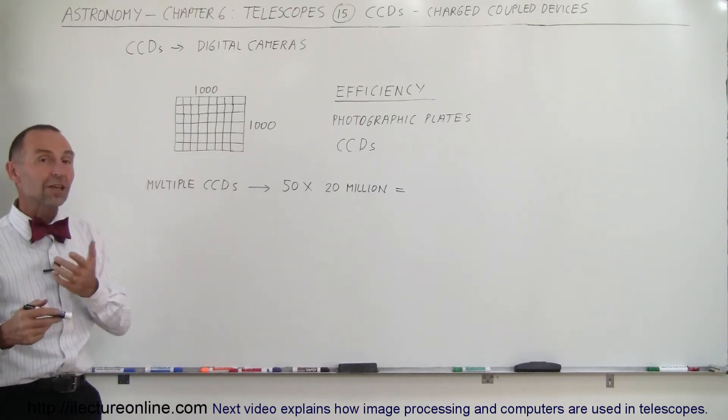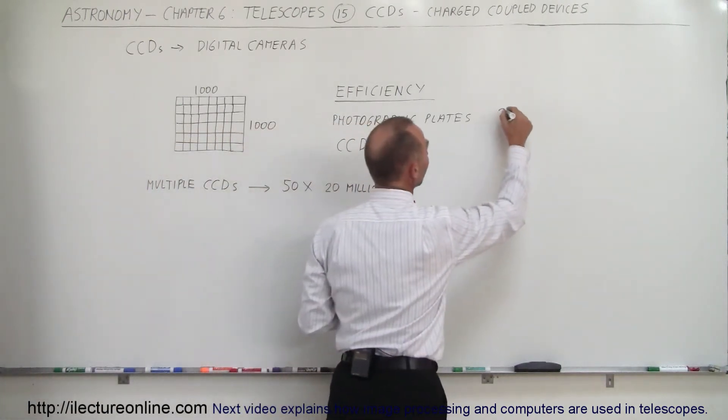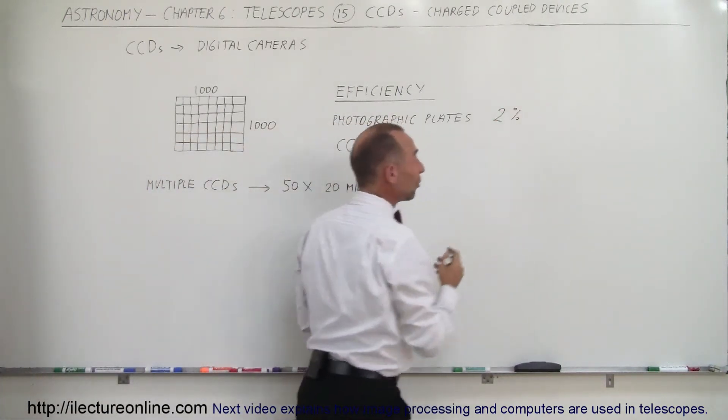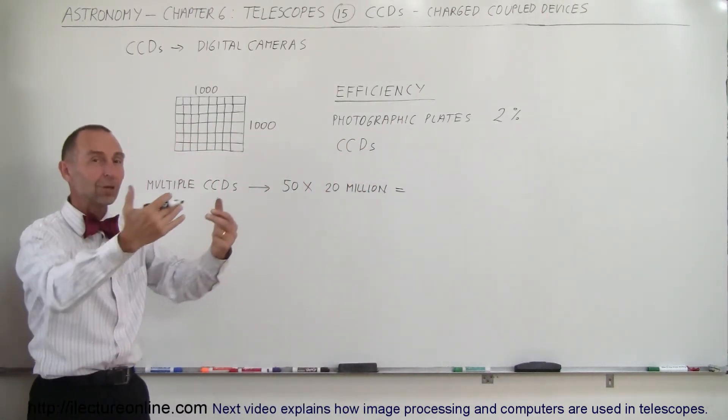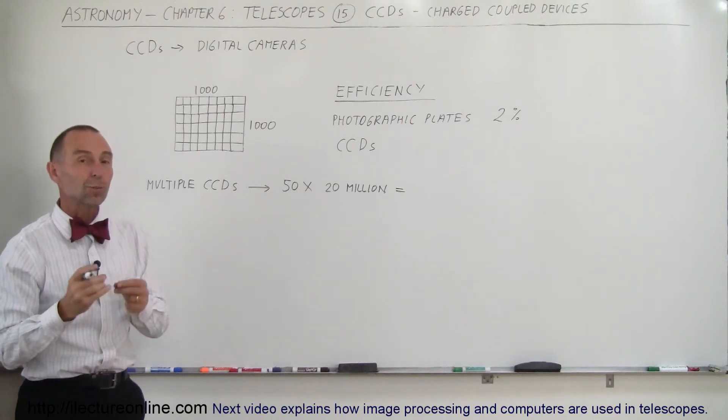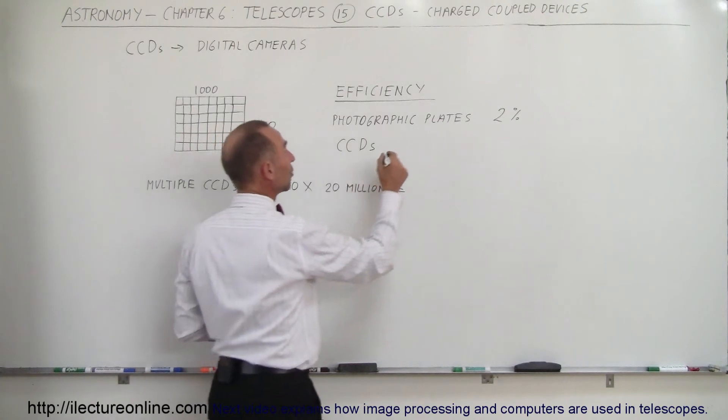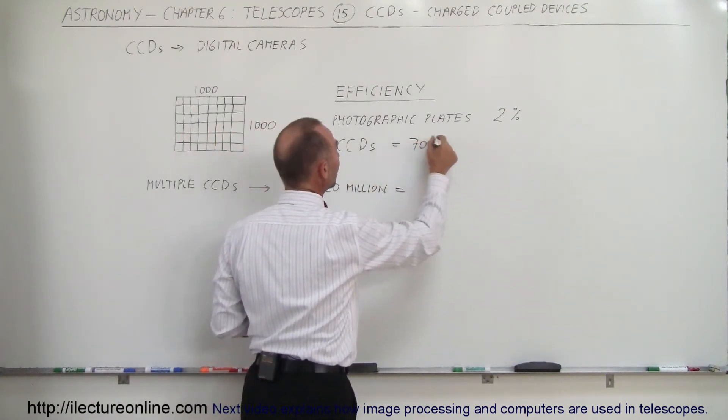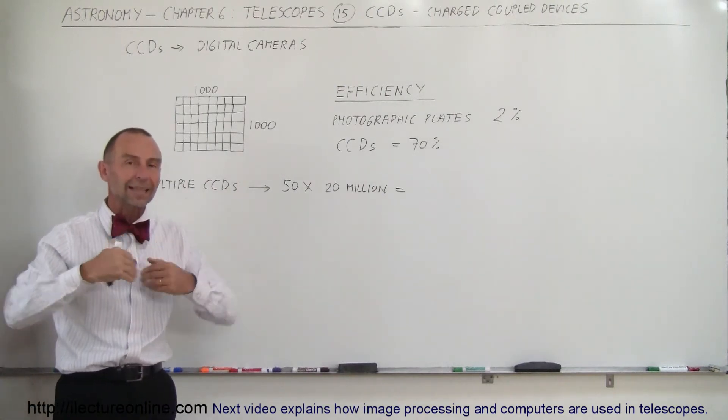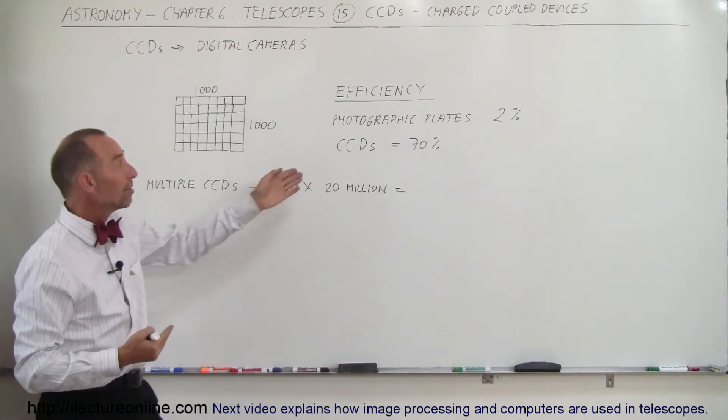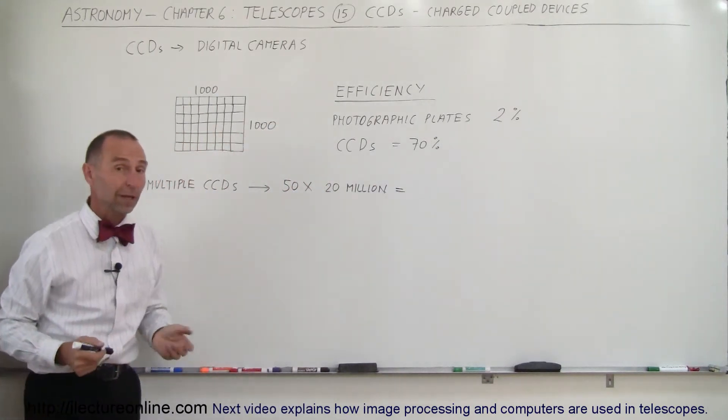The efficiency is also a big boom. Photographic plates collect about 2% of the light that they receive, so you have to let the aperture open for a long time to collect enough photons to make a photographic image. A CCD's efficiency is about 70%, meaning the efficiency is about 35 times better than the efficiency of a photographic plate.